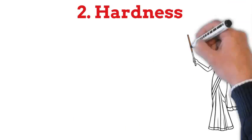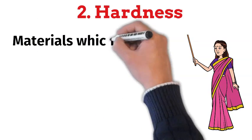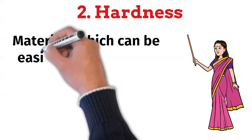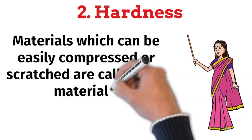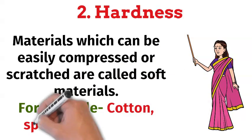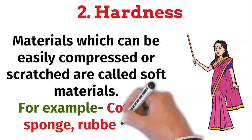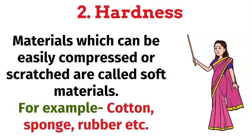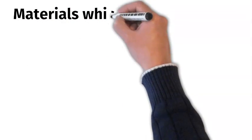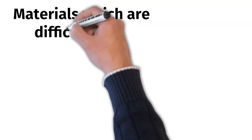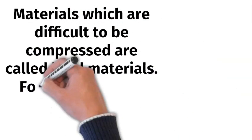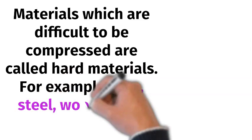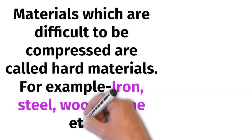Second, the hardness. Materials which can be easily compressed or scratched are called soft materials. For example, cotton, sponge, rubber, etc. Materials which are difficult to be compressed are called hard materials. For example, iron, steel, wood, stone, etc.